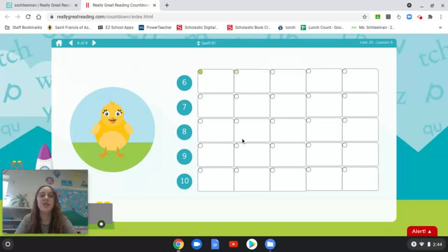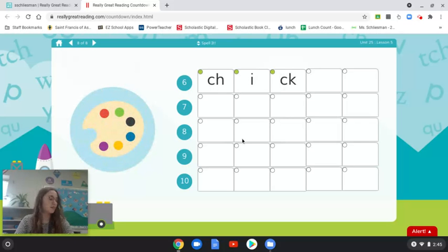Let's check our work. Chick has three sounds. Ch. I. K. Chick. Our next one is witch. As in which color is your favorite. Let's stretch it. Witch. W. I. Ch. Witch. Ready? Pause.